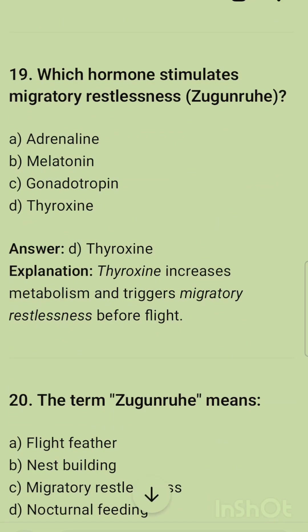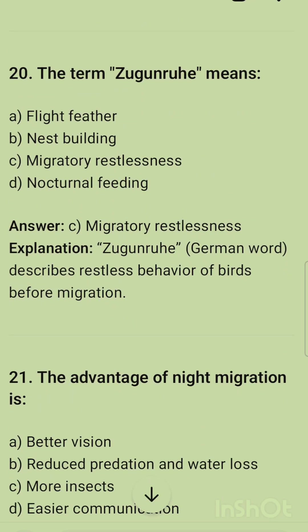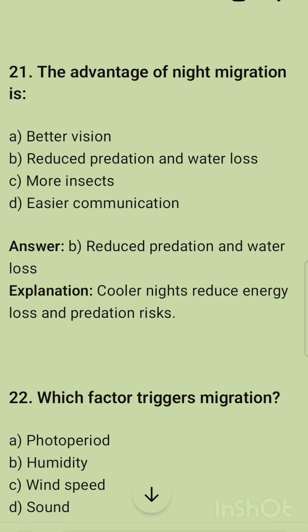Which hormone stimulates migratory restlessness, known as Zugunruhe? The correct option is thyroxine — it increases metabolism and triggers migratory restlessness before night flight. The term Zugunruhe means migratory restlessness; it is a German word describing the restless behavior of birds before migration.